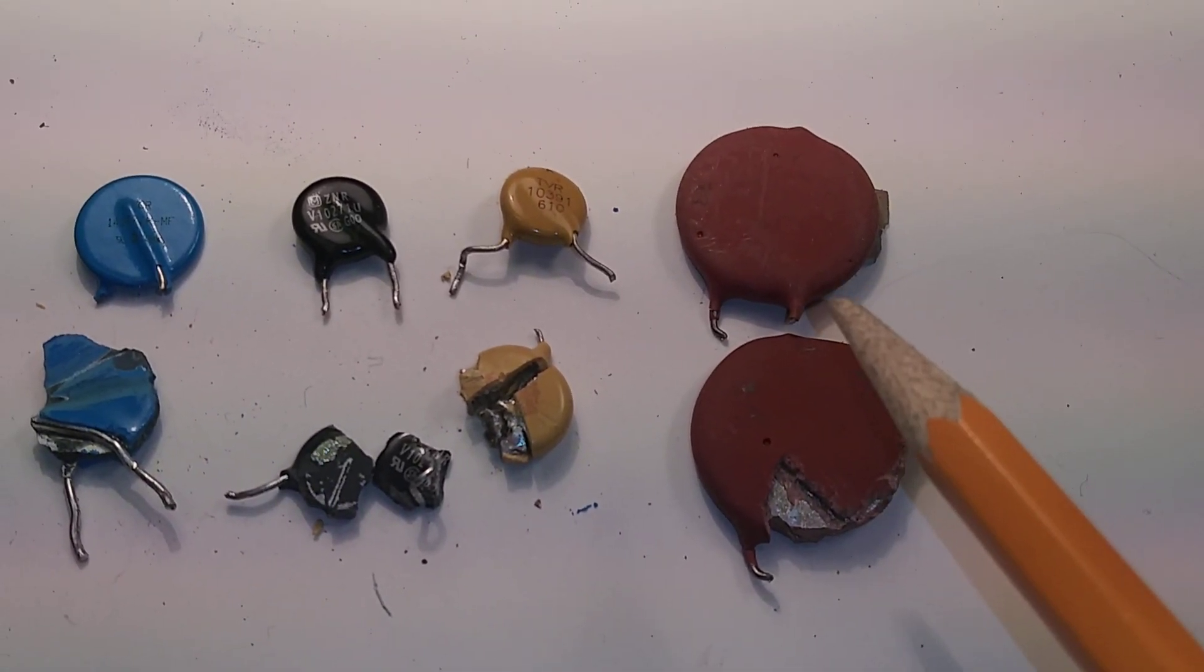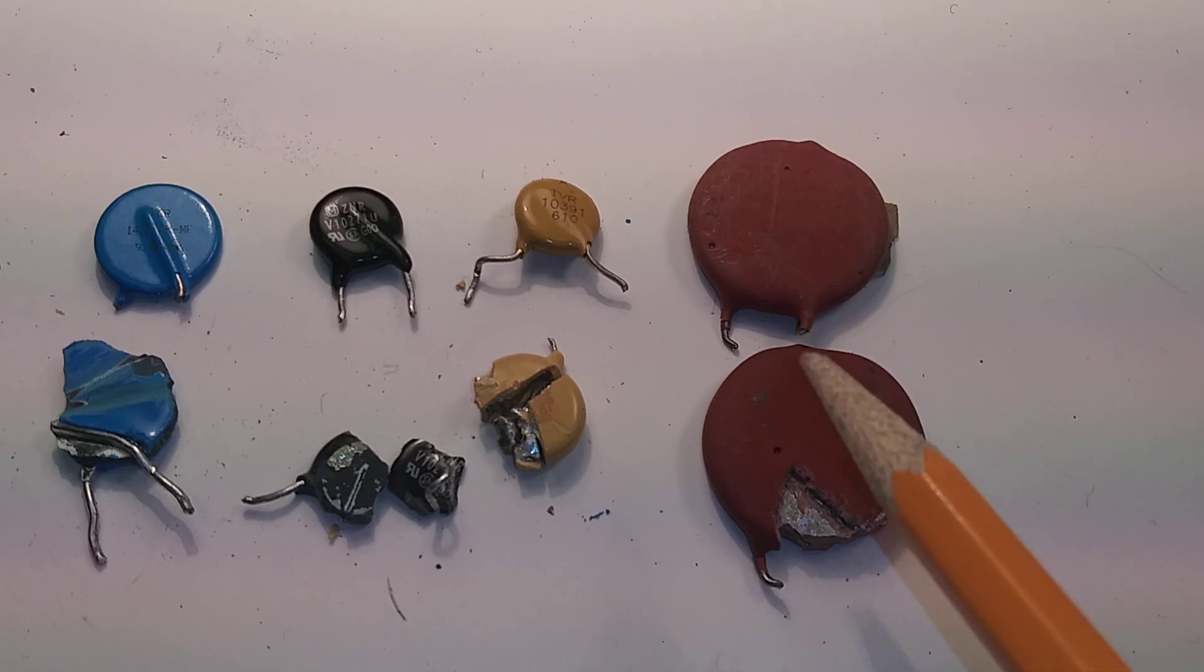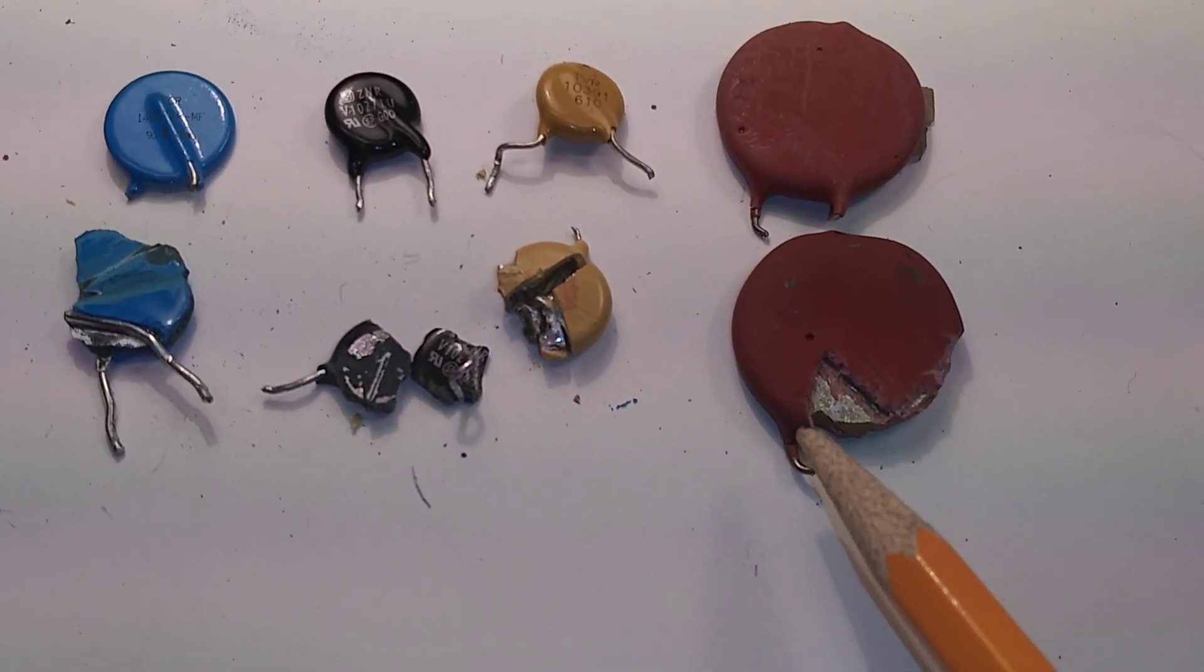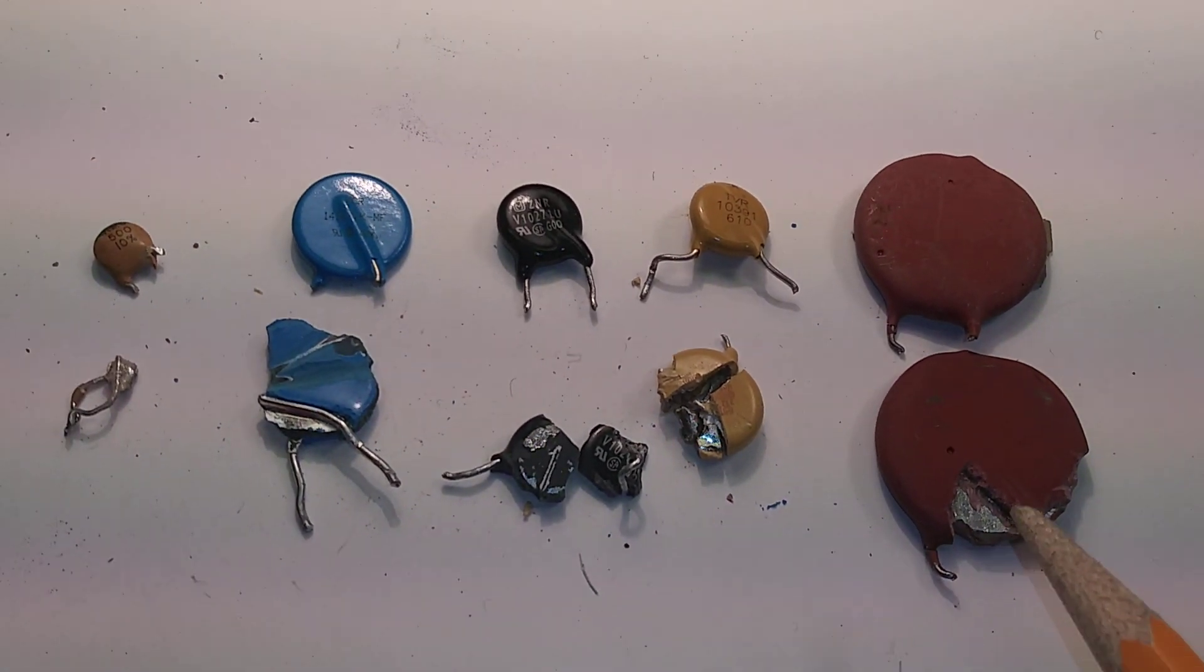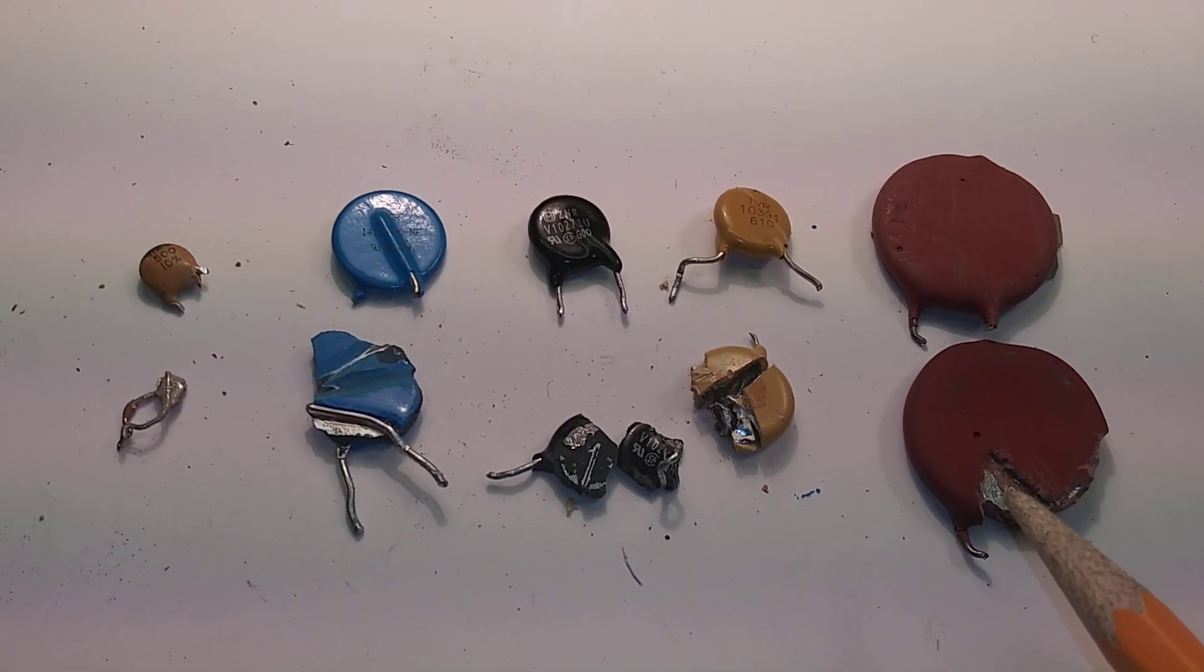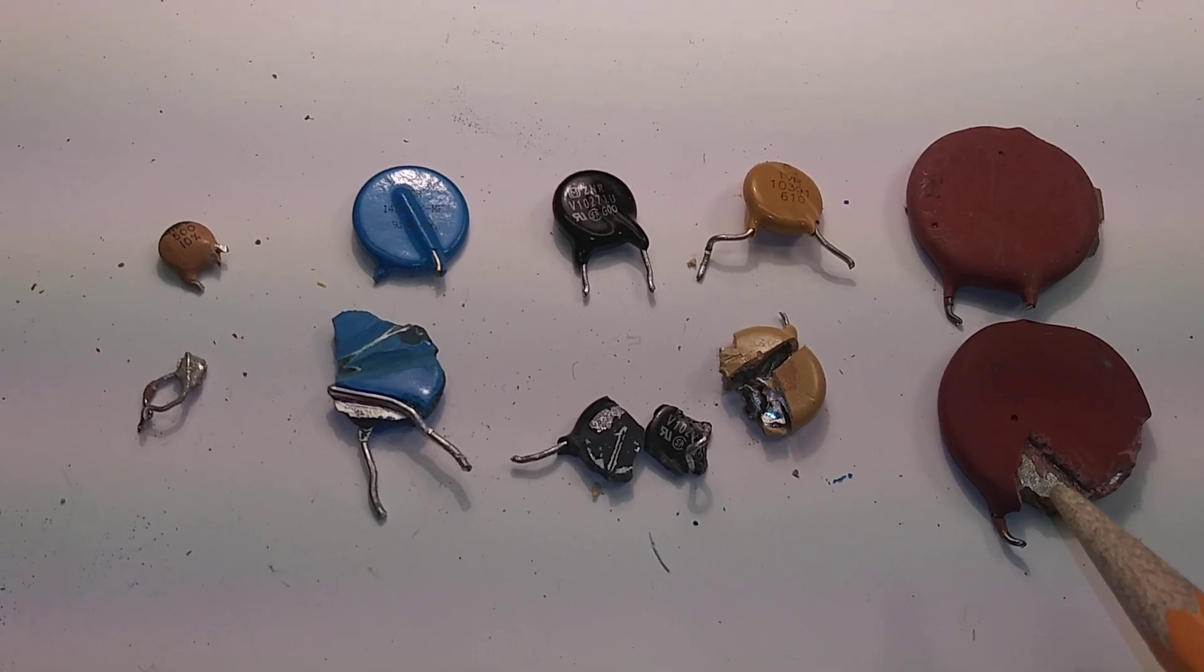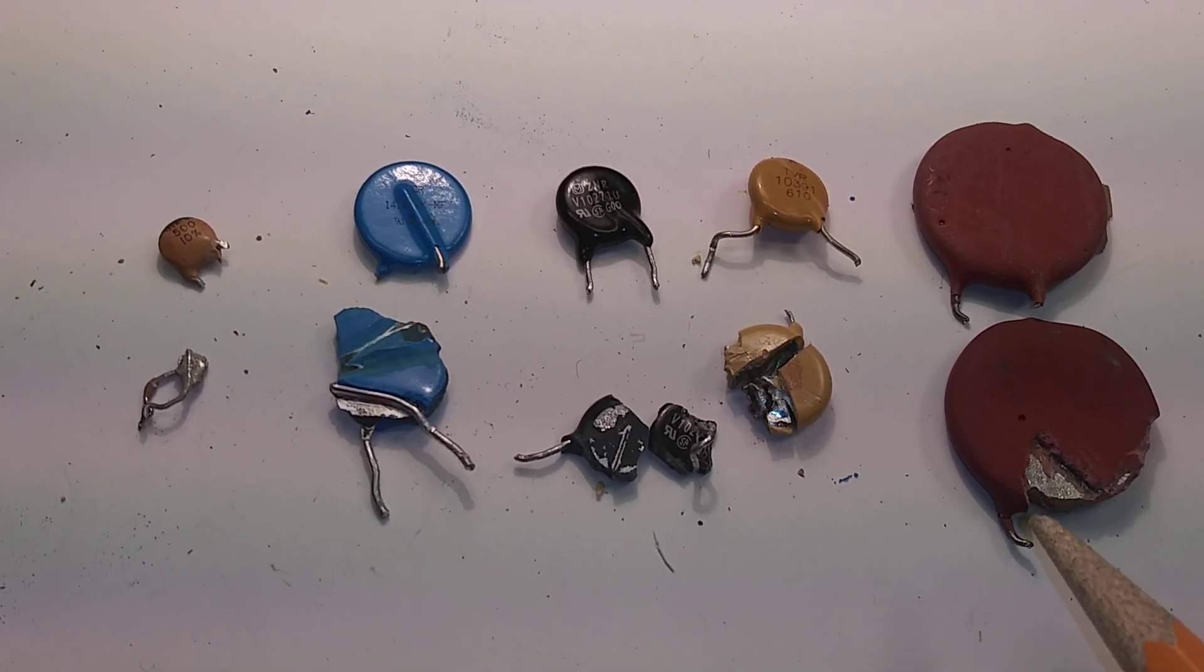This one here is an older disc capacitor, probably from the 70s, maybe early 80s. I've cracked that open and you can see some silver there at the bottom. Overall, if you're looking for recovery of silver from ceramic capacitors, I think you're probably going to be okay. I don't know the yields, but I do know there is some silver in these disc capacitors.